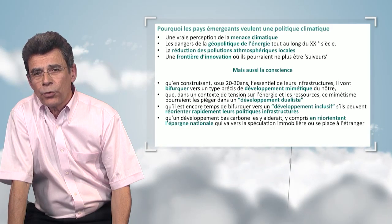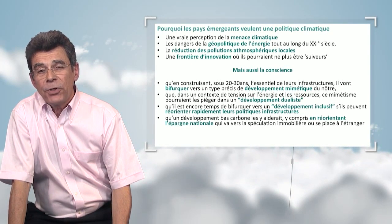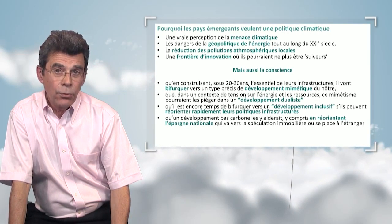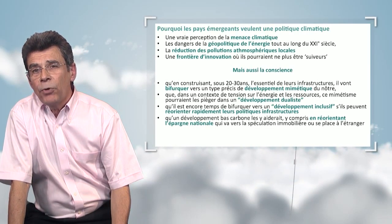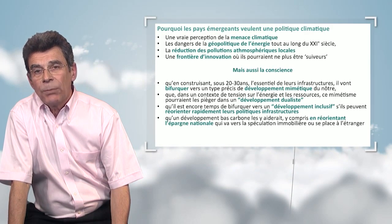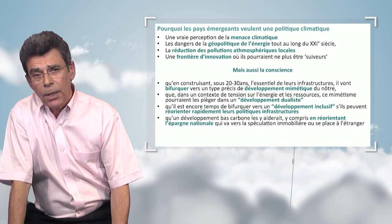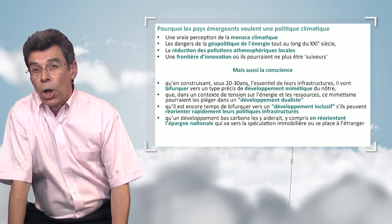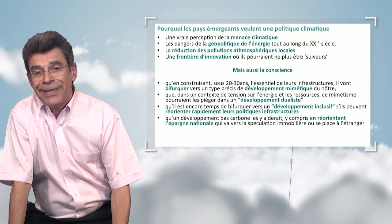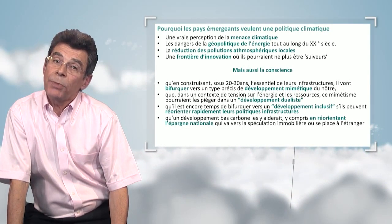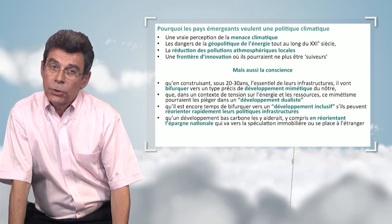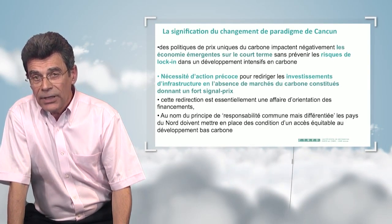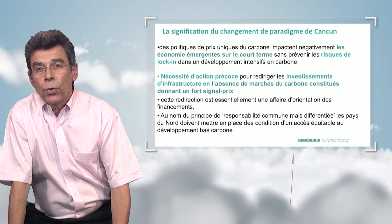They understand that they will have to move towards a more inclusive development and reorient their political infrastructures, otherwise they will not be able to offer the same type of development to their whole population. Scientists in those countries have envisioned scenarios of more inclusive development where there would no longer be a dichotomy between urban and rural areas, or between rich and poor people. This means adjusting policies regarding infrastructures, building, and construction. A low-carbon economy would help them by reorienting national savings, which are usually invested in real estate or abroad, so that those savings are instead invested within the country.